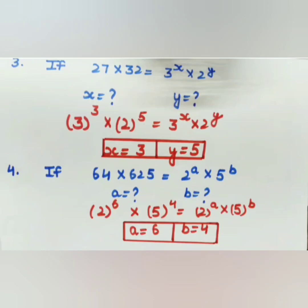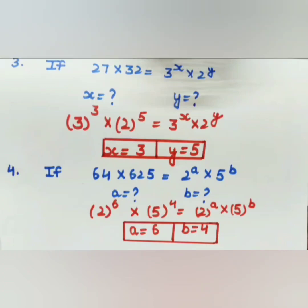Question 3: If 27 into 32 equals 3 to the power of x into 2 to the power of y, find the values of x and y. The LHS is 27 into 32 and the RHS is 3 to the power x into 2 to the power y. To find x, we express 27 in terms of powers of 3 — since 3 into 3 into 3 equals 27, we get 3 to the power of 3.